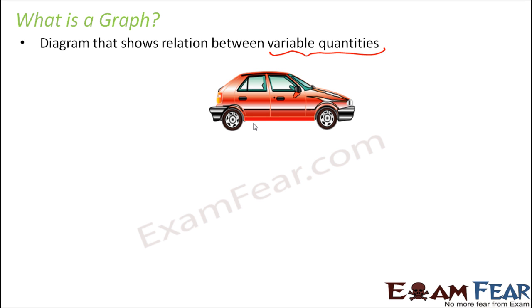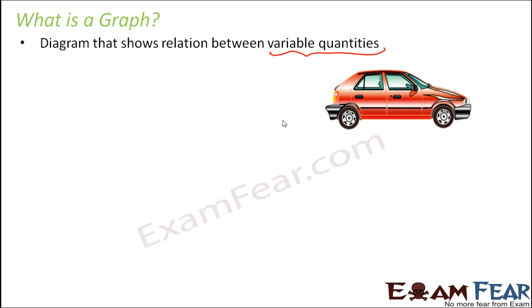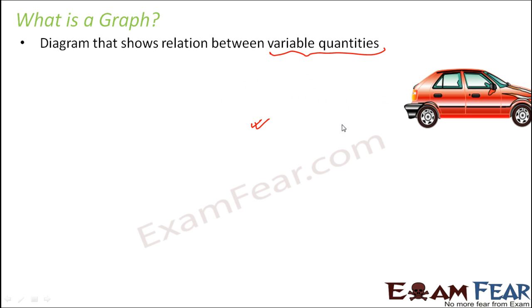So let us say when this car moves, what happens? As the car is moving, its position is changing. Therefore, the distance covered is also changing. So when the car was here, it had covered no distance. When the car reached here, it had covered this much distance. Now the car is here. So it has covered this much distance. So as the car is moving, so the distance moved is also changing and the time is also changing.